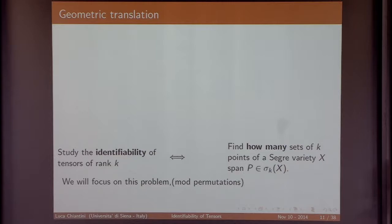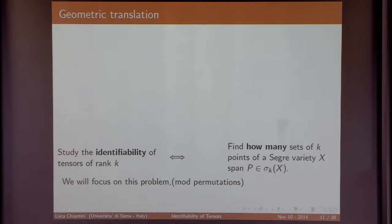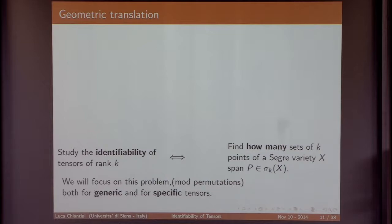The geometric translation of our problems is: find the dimension of the secant variety of the Segre varieties; find equations for these secant varieties; find k points in the Segre variety which span a given point p inside sigma-k of X; and study identifiability — find how many sets of k points of the Segre variety span a given point p. We will focus on the last problem. Throughout, 'how many' means modulo permutations of the k points.